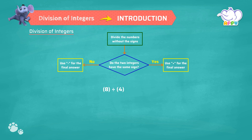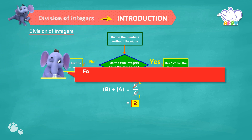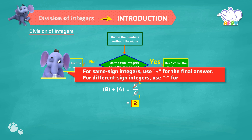Let's look at a few examples. 8 divided by 4. We first divide 8 by 4, which equals 2. We have to place the sign for this quotient. Here 8 and 4 are both positive integers. So the answer is 2. We do not use a plus sign. For same sign integers, use plus for the final answer. For different sign integers, use minus for the final answer.